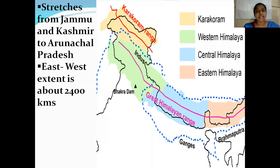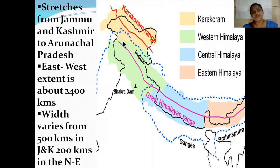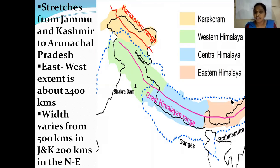We are learning northern mountains as a whole; later we will learn about only the Himalayas. The east-west extension is 2,400 kilometers, but the width varies. In the northern part, the width is nearly 500 kilometers, whereas when it reaches the northeastern part, the width reduces to 200 kilometers. So it varies from 500 kilometers in the north to 200 kilometers in the east.